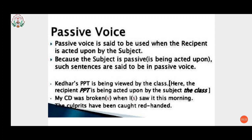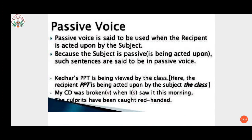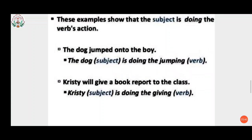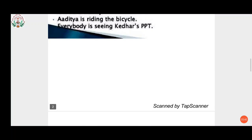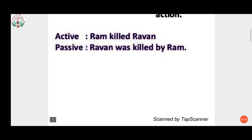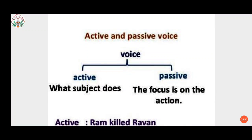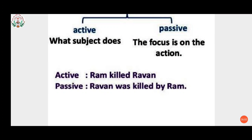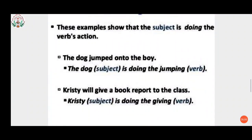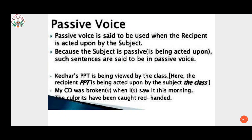In passive voice, the person or thing denoted by the subject suffers the result of the action done by someone or something. In passive voice, the focus is on the action — when the subject is being acted upon, the focus is on the action. Let's understand this with the help of examples.